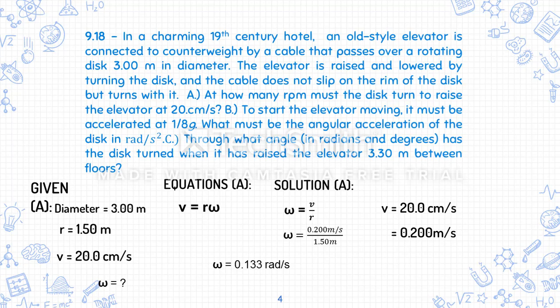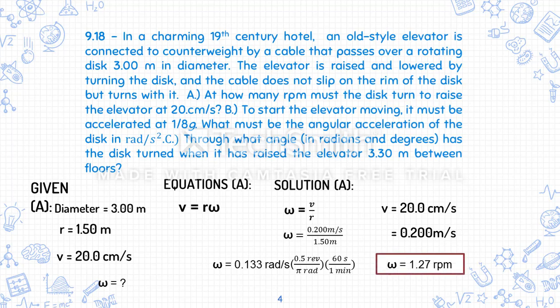This is not yet our final answer because we need it in RPM (revolutions per minute). Since 1 revolution equals 2π rad and 1 minute equals 60 seconds, converting gives us a value of 1.27 rev per minute. That is our angular velocity in RPM.